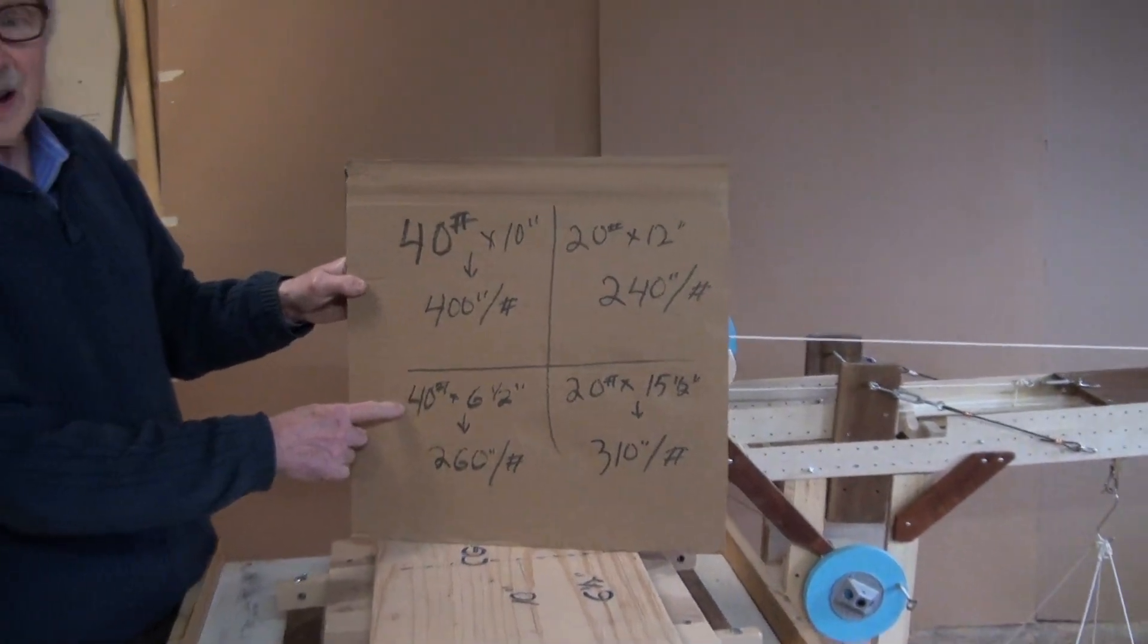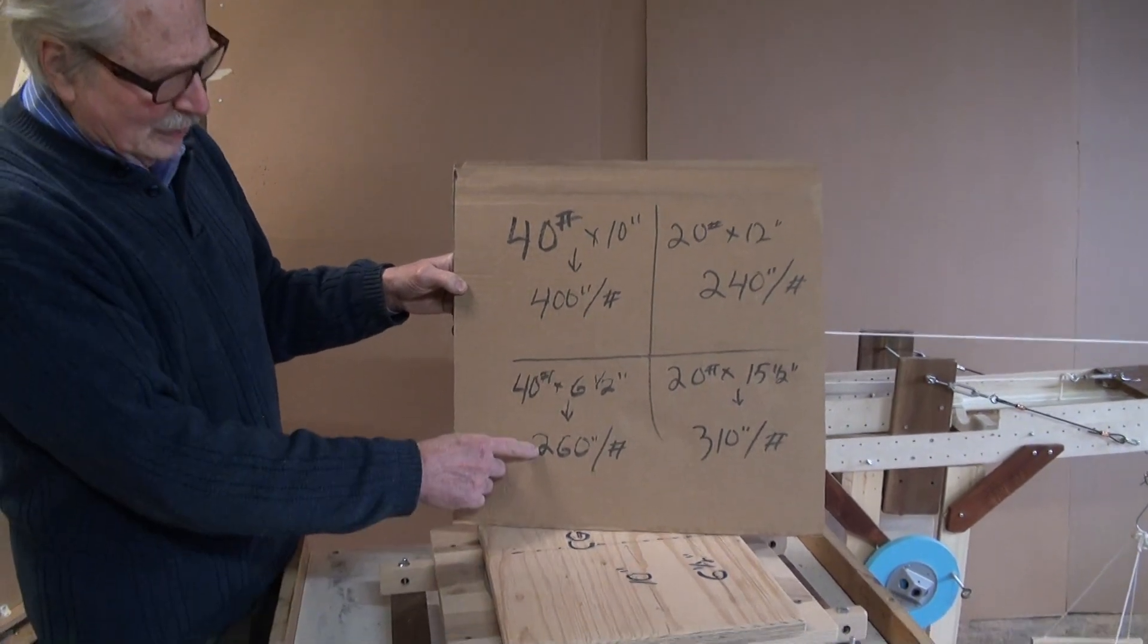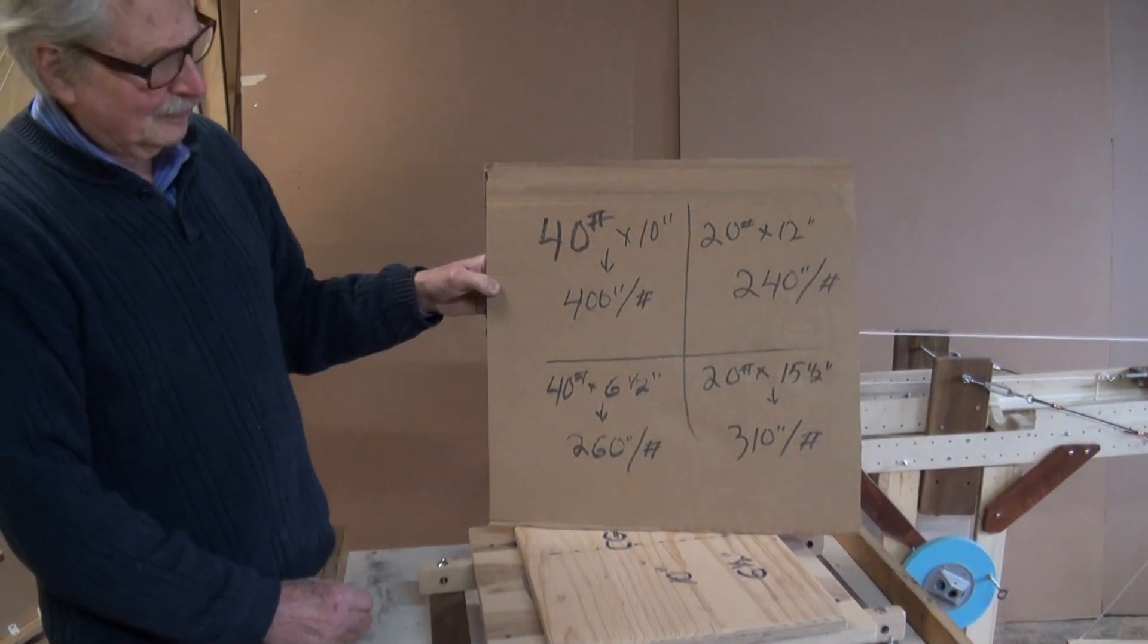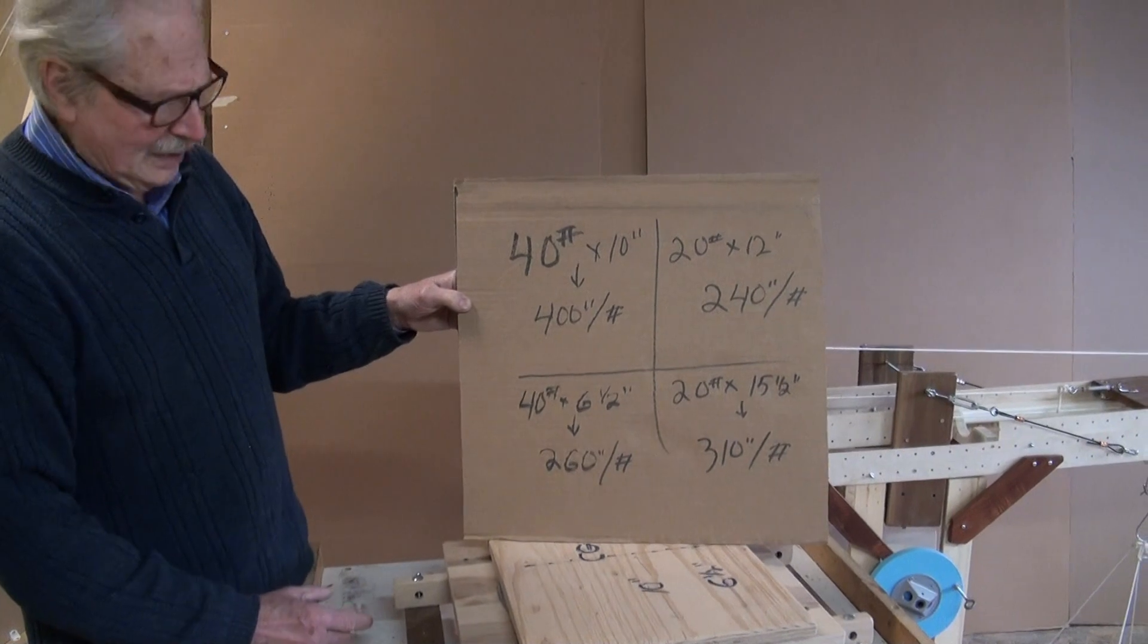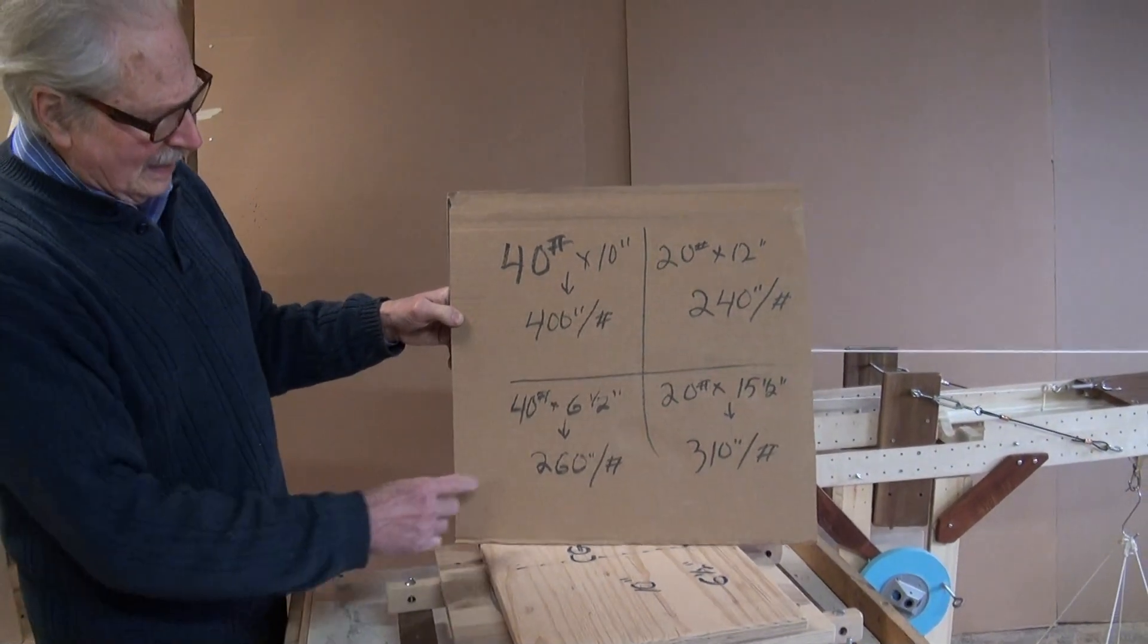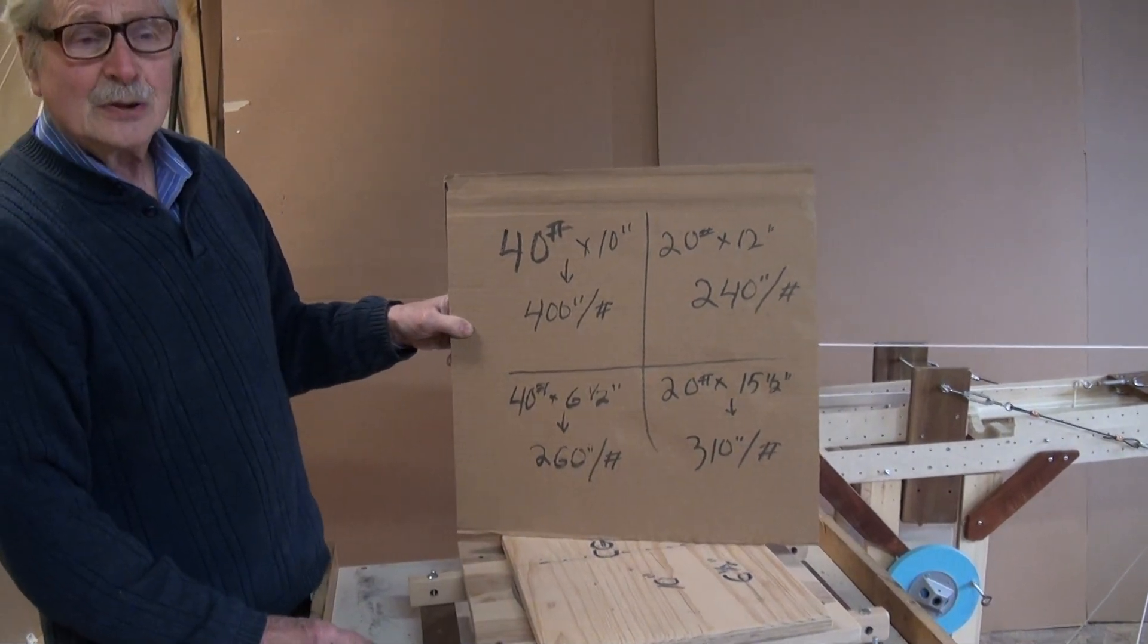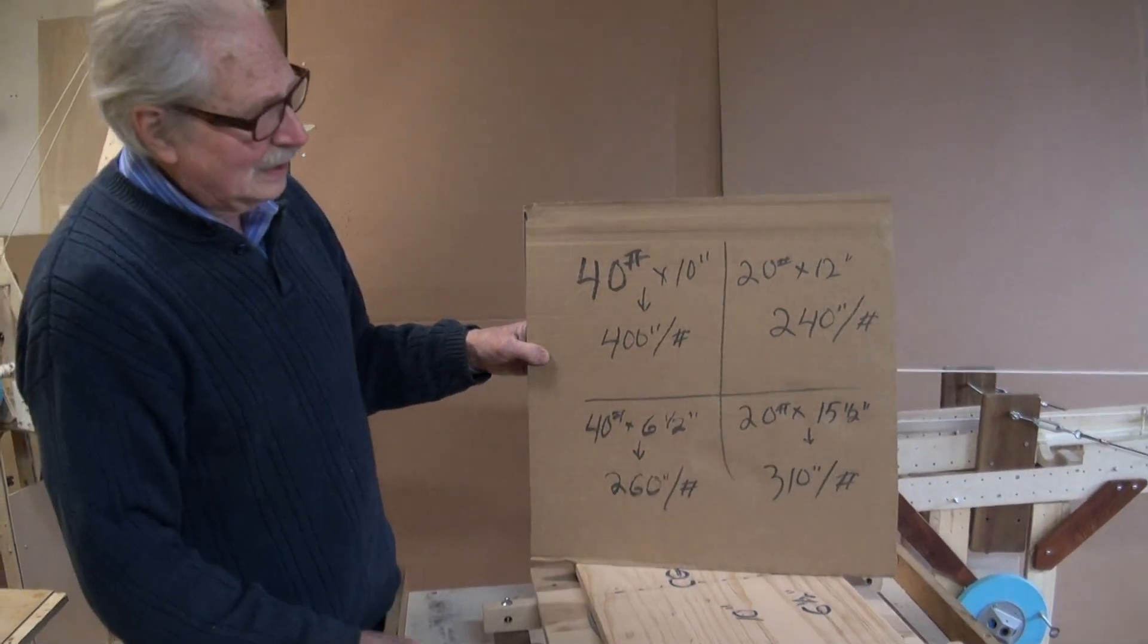So the weight is the same, but now it's six and a half instead of 10. We've got 260 inch pounds. So the distance from the center of gravity of the crane to the pivot point got smaller, but the distance from the pivot point to the center of gravity of the load got bigger.